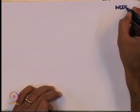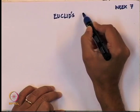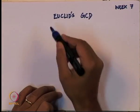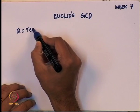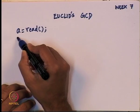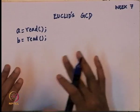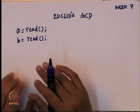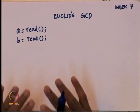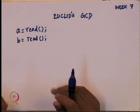The GCD algorithm we are going to use is called Euclid's algorithm. Euclid's GCD algorithm works roughly like this. Let us say there are two numbers and I want to find the GCD of that, so I need to read the numbers from the user. Imagine this as a template for a program written in C or C++. I am not going to write syntactically correct code as long as you understand the meaning of what I am writing.